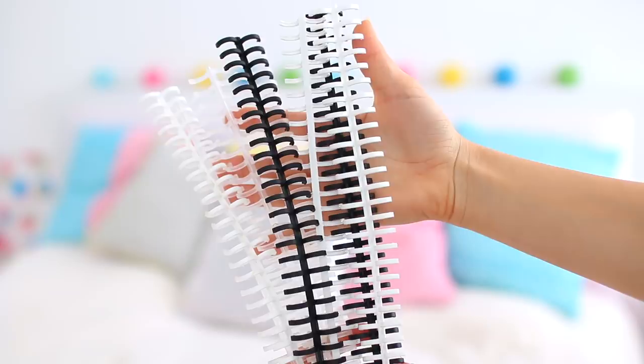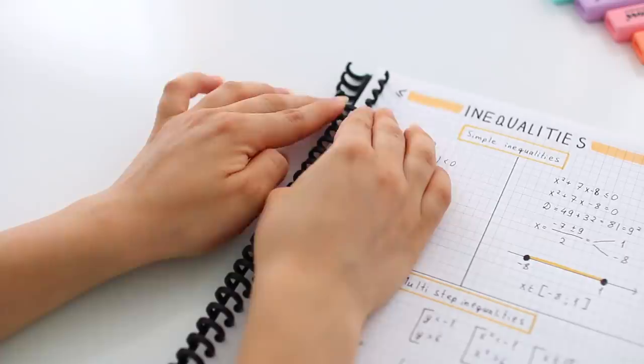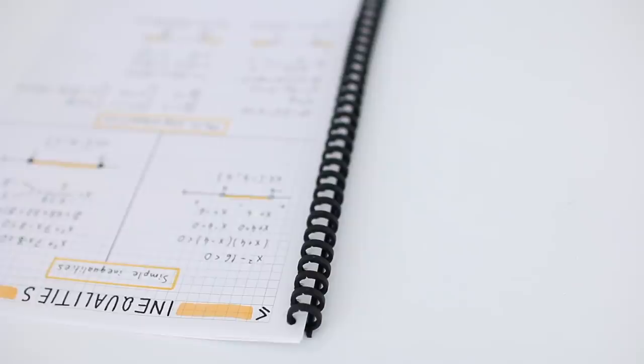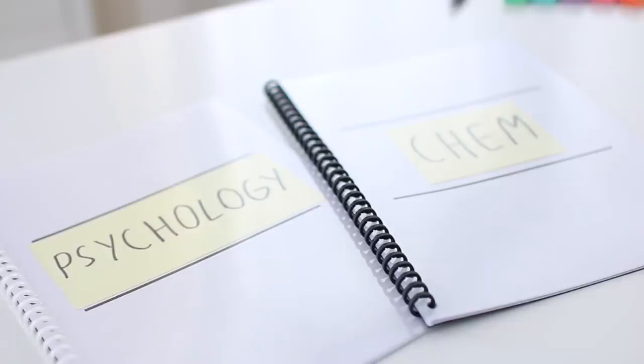One day I was browsing AliExpress and I came across these plastic bindings and they were super affordable. Essentially this allows you to bind different loose leaf papers together and all you have to do is just close the rings. These plastic bindings allow me to have different notebooks for each subject while still being able to use loose leaf paper.